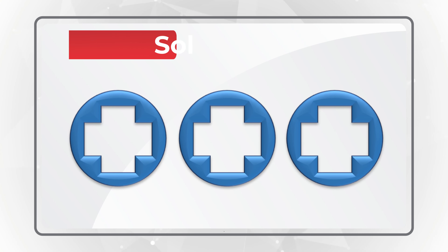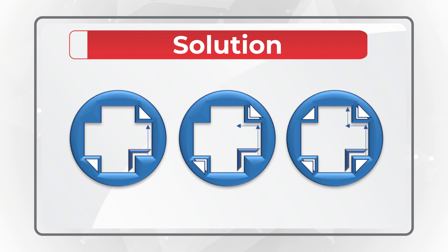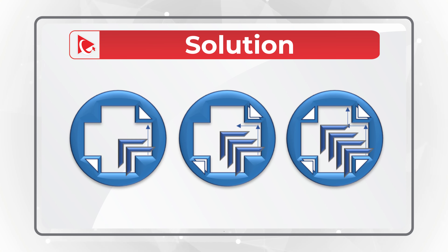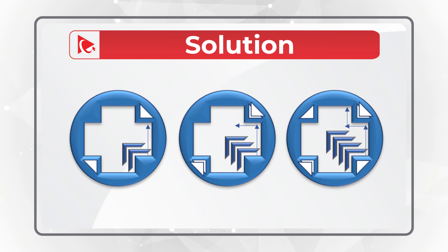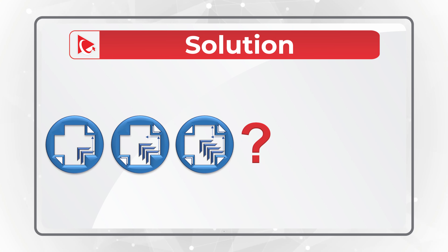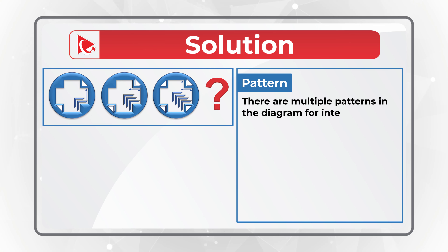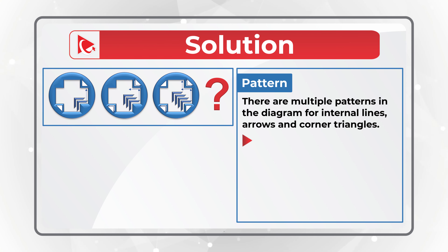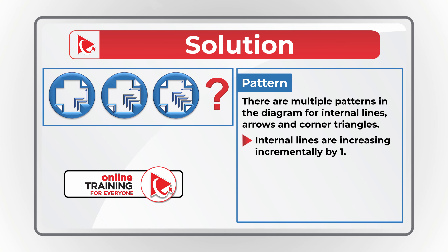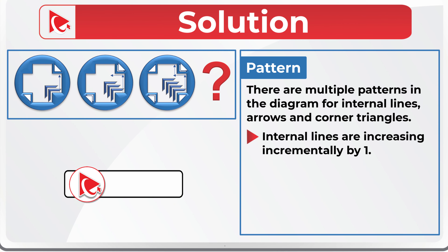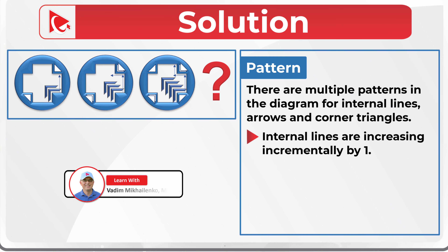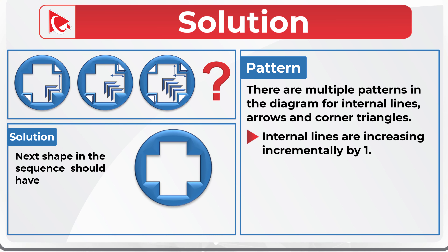The variety of objects includes internal lines, arrows, and corner triangles — and there are multiple patterns for all of these. Internal lines are increasing incrementally by one. The first object has two internal lines, the next has three, the one following has four — which means the next object in the sequence should have five lines.